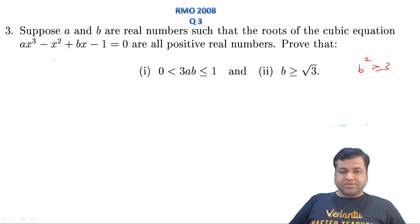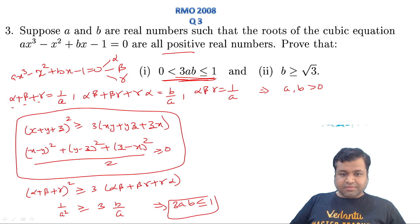In the second part, we need to prove b ≥ √3. We need b² ≥ 3. Now b² is where? b is here, sum of product taken two at a time. So let's apply this.